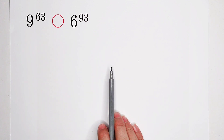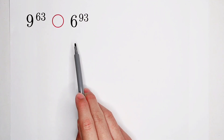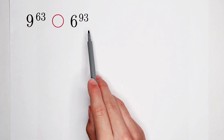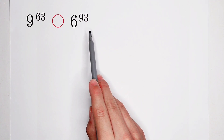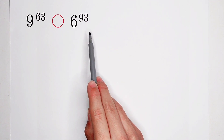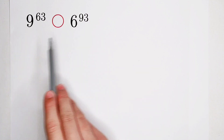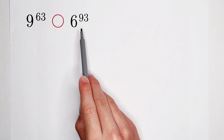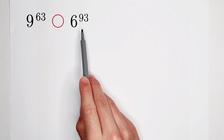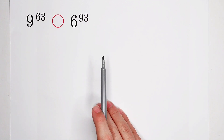The bases are different, and the exponents are also different. They don't have the same values. What should we do? Of course, we want to make the bases or the exponents have the same value. However, it won't be possible for this question.